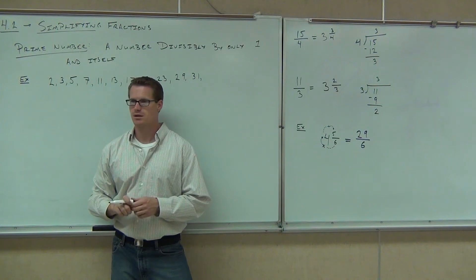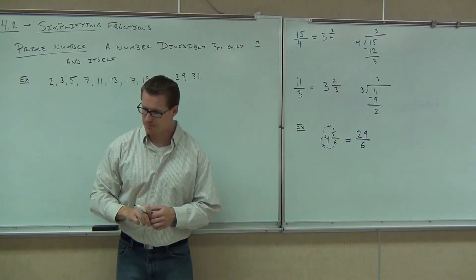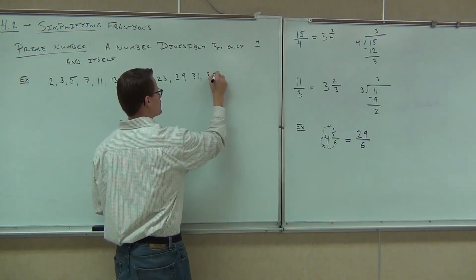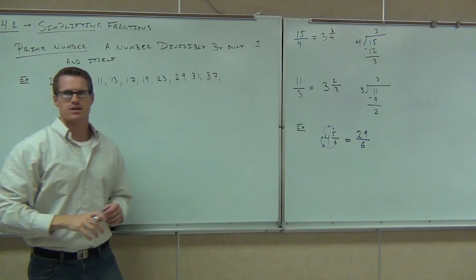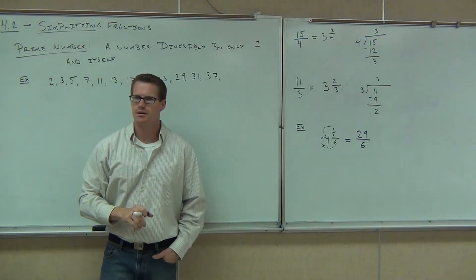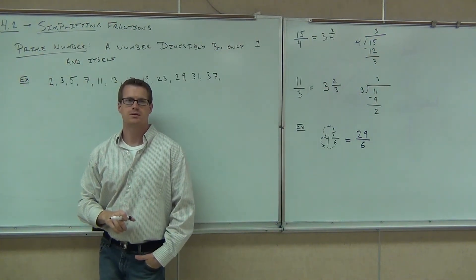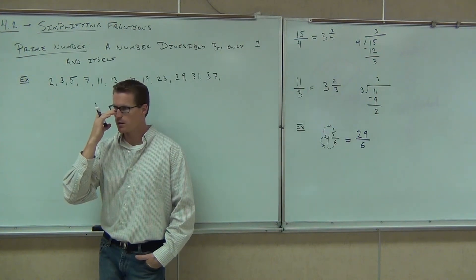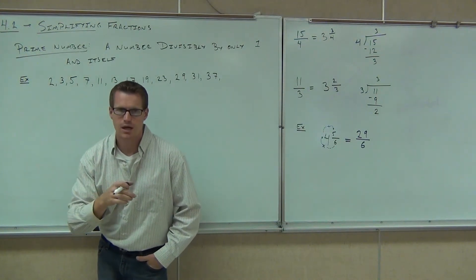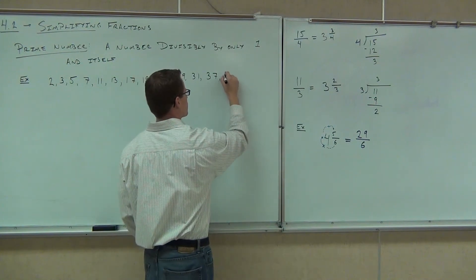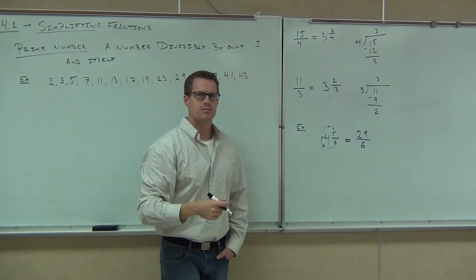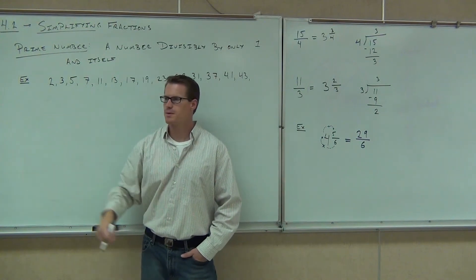How about thirty-seven? Yes, it is. Thirty-seven, yeah. How about thirty-nine? No. What's in the thirty-nine? Three and thirteen. Very good. How about forty-one? Yes. And so is forty-three. Do these ever end? No. Can you find more and more prime numbers to keep going and going and going? But they become much less rare.